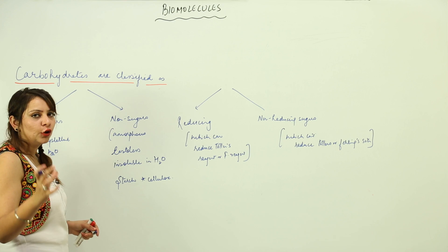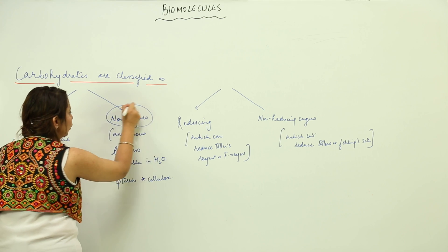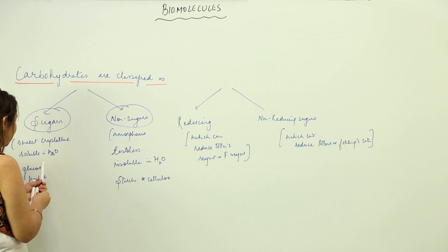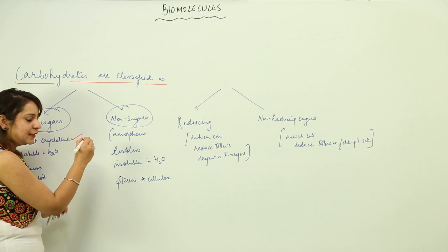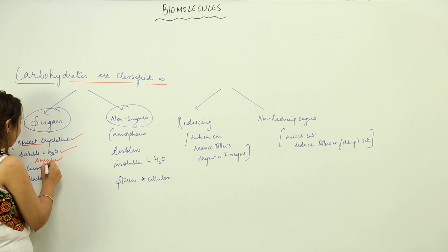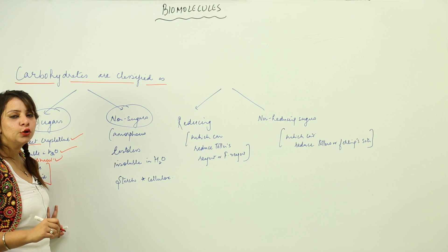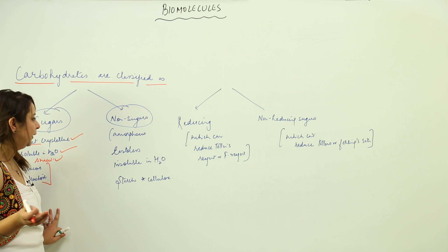We classify them as sugars or non-sugars based on form, taste, or solubility in water. Sugars are sweet, crystalline solids that are soluble in water and taste sweet. Examples include glucose and fructose, which are soluble in water, taste sweet, and are crystalline solids.